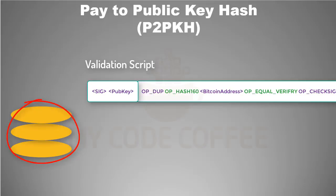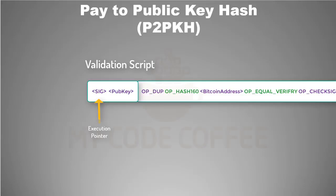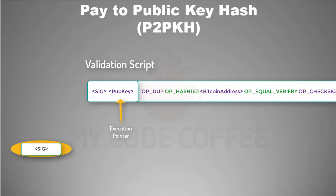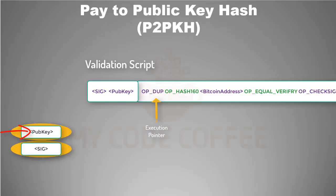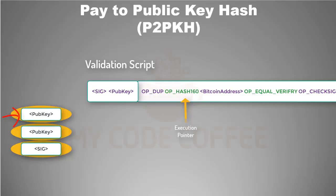As the execution pointer is at the signature, we push this signature to the stack — the signature is now the topmost item. We then move the execution pointer to the next element, which is the public key of the signer, and push this public key to the top of the stack. Next, we move the pointer to the duplicate operation, and since we always operate on the topmost element, we duplicate this public key. Then we move the pointer to the hash operation and perform the hash on the public key, which is the topmost element, so it becomes the public key hash.